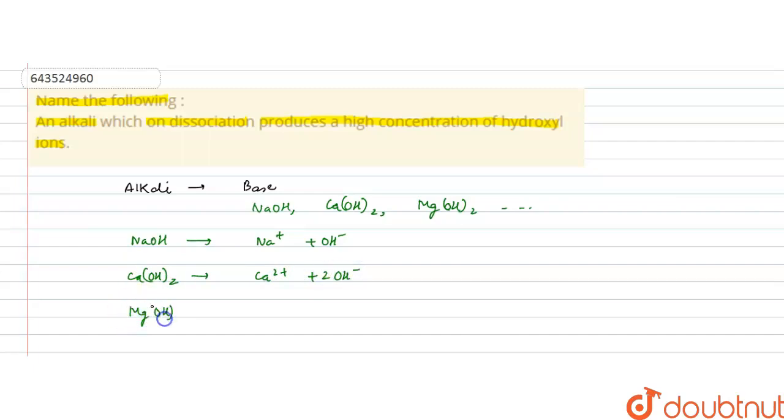Magnesium hydroxide, when this base dissociates it will give Mg 2 positive and OH negative ions.